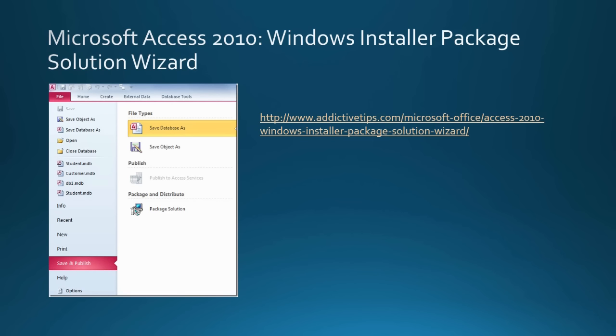Secondly, I would not run your application in 2010. If you built your application in 2013 and you have Access 2010 somewhere on your network and you copy the file over to that other computer, don't run the application. Just open it using the shift key so you can get into the developer options and then go straight into save and publish and the package solution wizard.